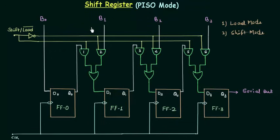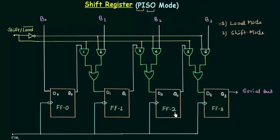The heading says parallel input serial output mode, so we have two aims. The first one is the parallel input and the second one is the serial output. The first aim we will achieve from the load mode. By the load mode we have the parallel input of data, in which we will load the data into each flip flop simultaneously. Flip flop number 0 will have B0, flip flop number 1 will have B1, flip flop number 2 will have B2 and flip flop number 3 will have B3.